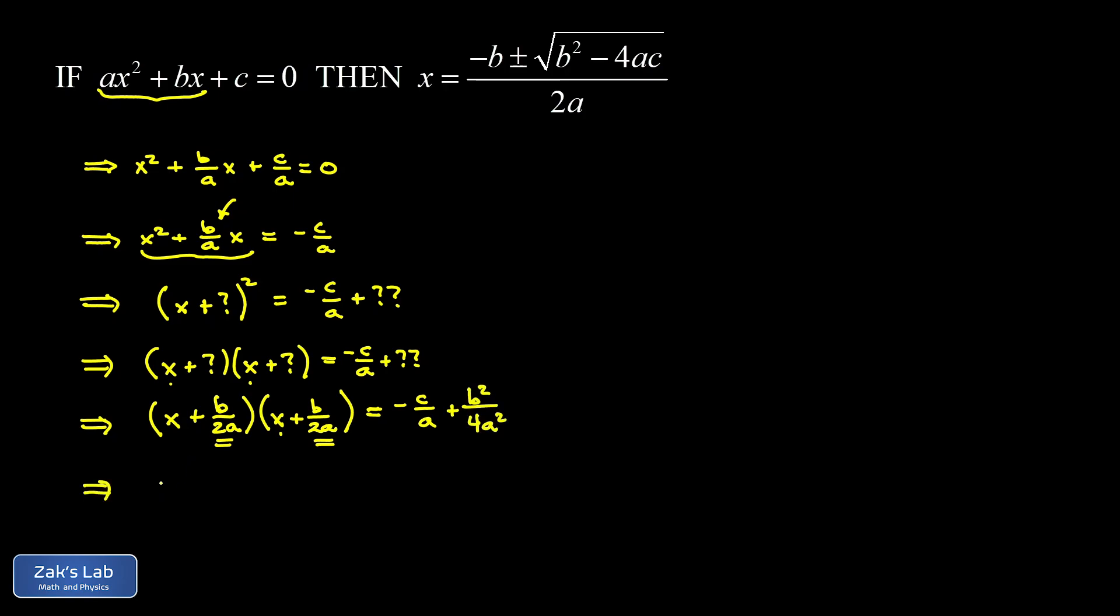Now, if you're comfortable showing all those steps without expanding the squared binomial into two terms, that's fine. I was just trying to make it a little easier to see. What we have on the left-hand side now is x plus b over 2a all squared. And on the right-hand side, I'm going to go ahead and combine these two fractions now.